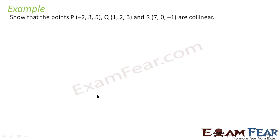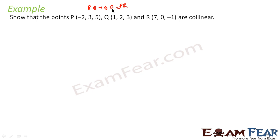Let's take one more example. We have to prove that points P, Q, and R are collinear. If we can prove that PQ + QR = PR, that means the sum of two distances equals the third, which proves the points are collinear. So let's find the distances PQ, QR, and PR.